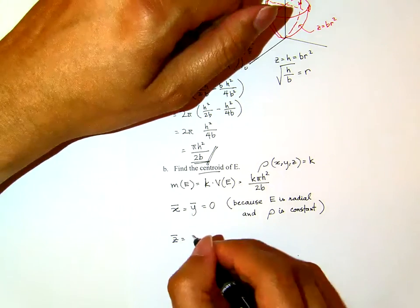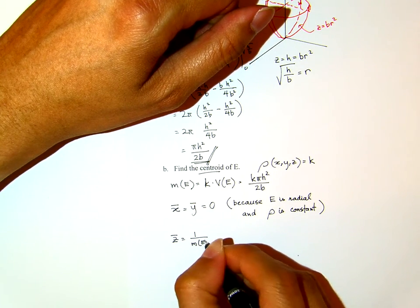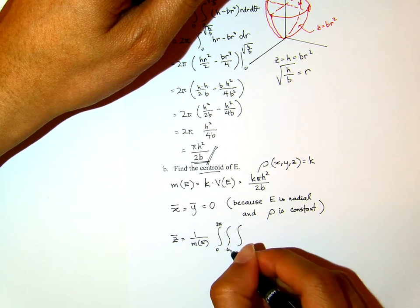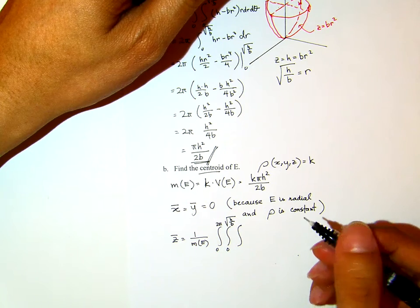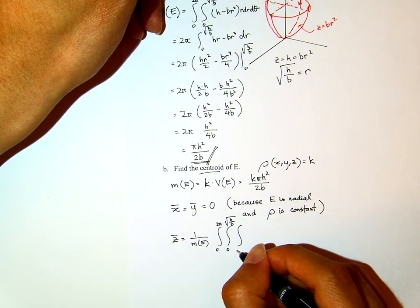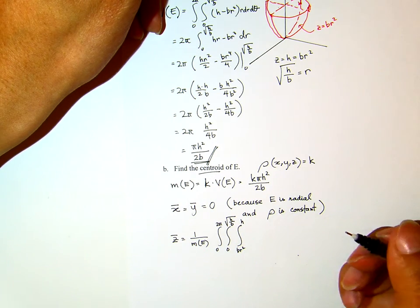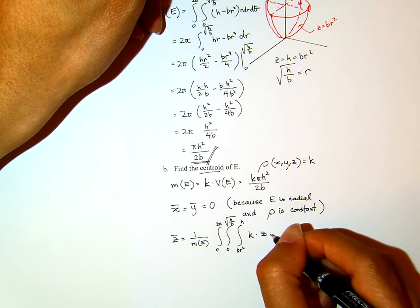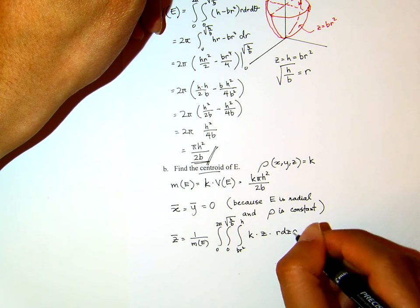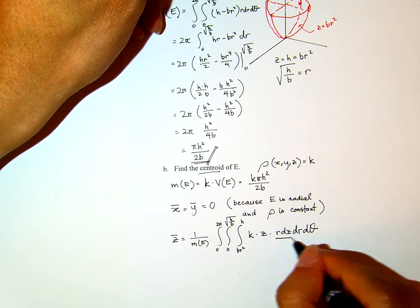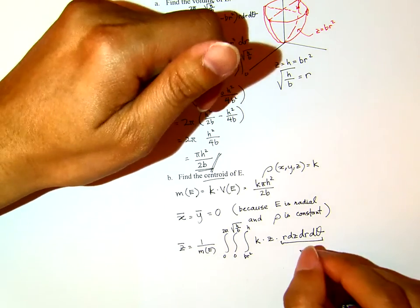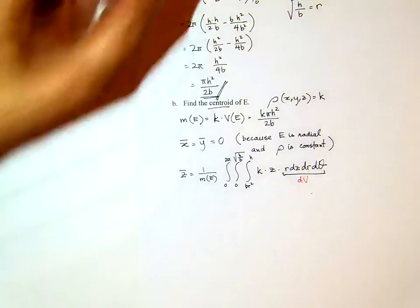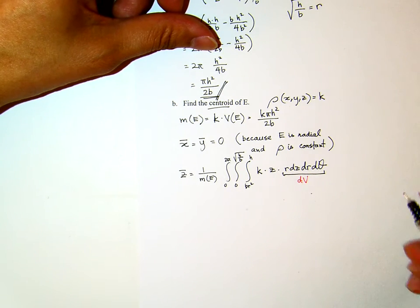Our issue is only about z̄. Now, z̄ will be, of course, 1 over the mass of E, triple integral. Again, 0 to 2π, 0 to square root of H over B, and then the density times z times dv, which is r dz dr dθ. This is my dv here. Remember z̄, you basically insert z into the integral.